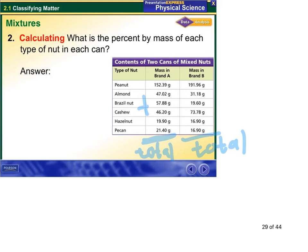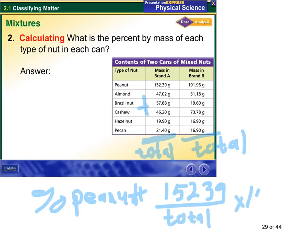And then to get the percent peanuts, you'd take the 152.39 divided by the total amount, and then you'd have to multiply it by 100 to get a percent.